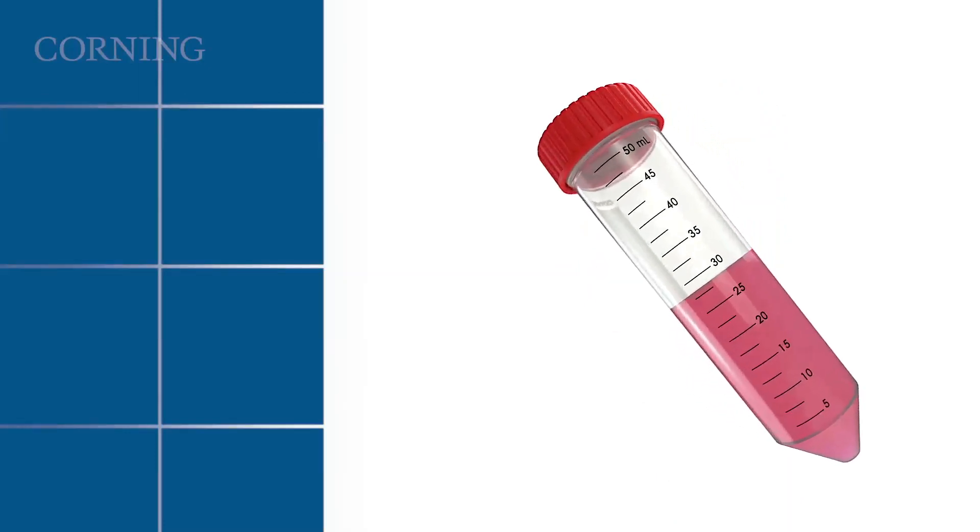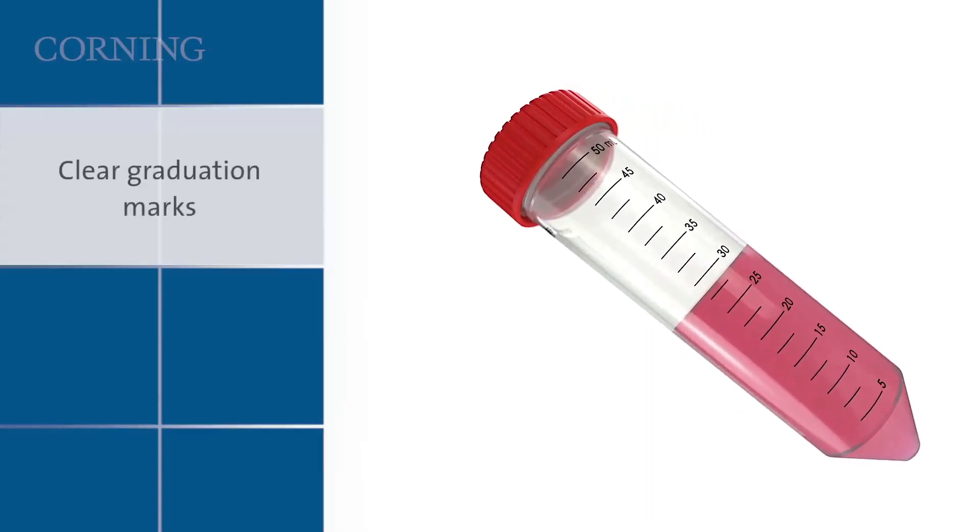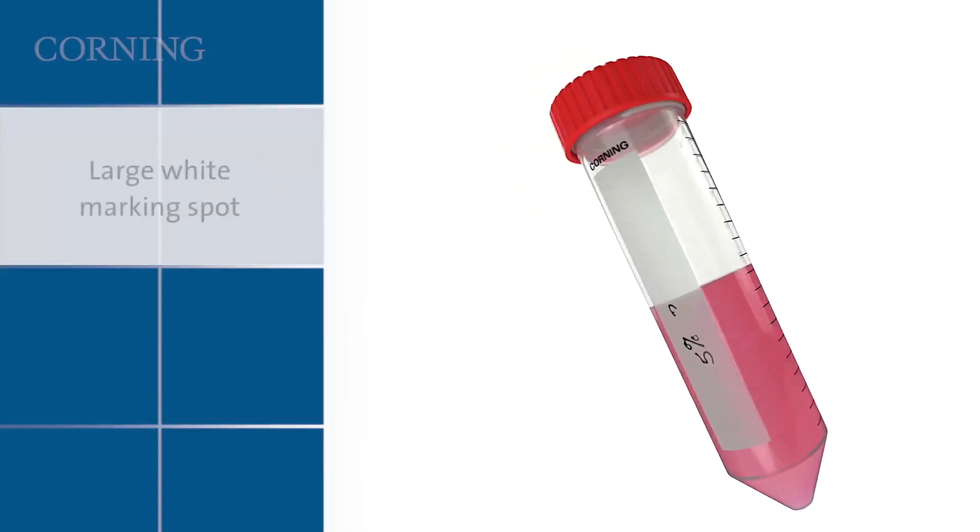The Centristar centrifuge tube was designed for researchers' ease of use, with clear graduations to provide accuracy and consistency and a large white marking spot to enable easy labeling.